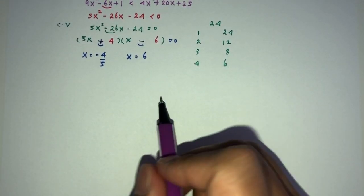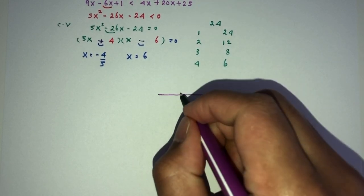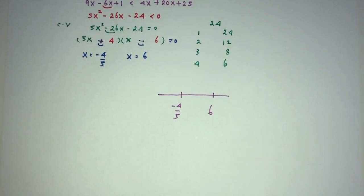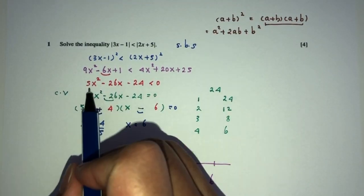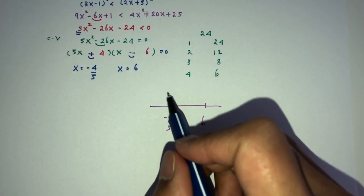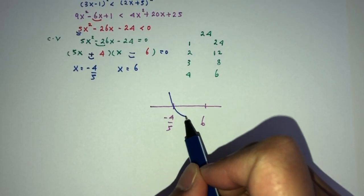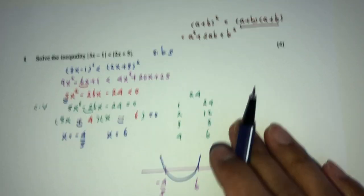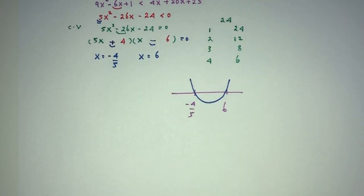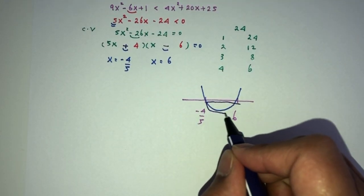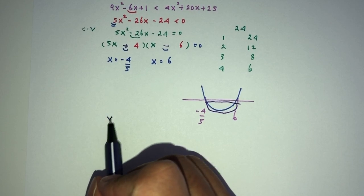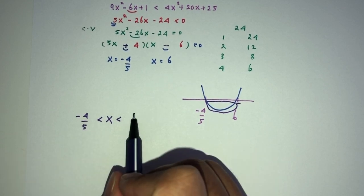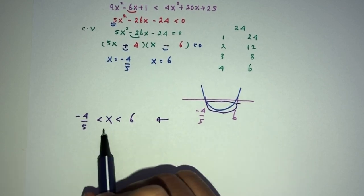Now, finally, use my number line right here. This is the value of minus 4 over 5, and this is the value of 6. Now, because the coefficient of x squared is positive, we know it is a minimum curve — it will have a minimum shape. You can see this has to be less than 0, so below this line. So it will be only between those two values. Finally, x has to be between the values of minus 4 over 5 and 6, and that is your question number 1.